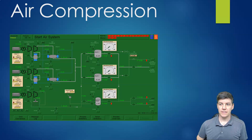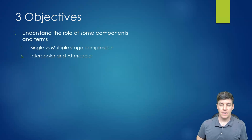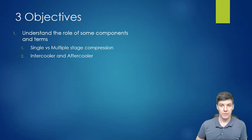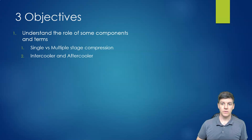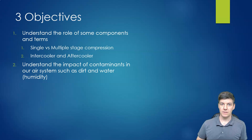In week two of our labs, we're going to look at air compression. We have three objectives we're going to accomplish. First, we want to learn about some terms related to air compressors — single versus multiple stage compression, as well as intercoolers and aftercoolers and what their function is. We also want to talk about some contaminants like dirt and water, look at ways to reduce those, and the problems they cause.